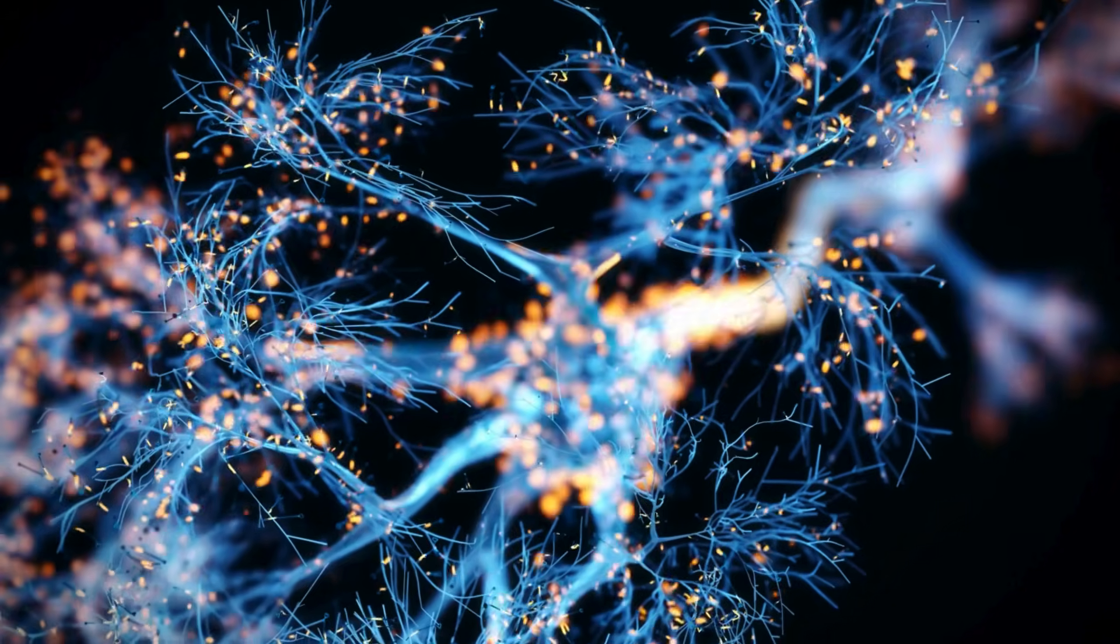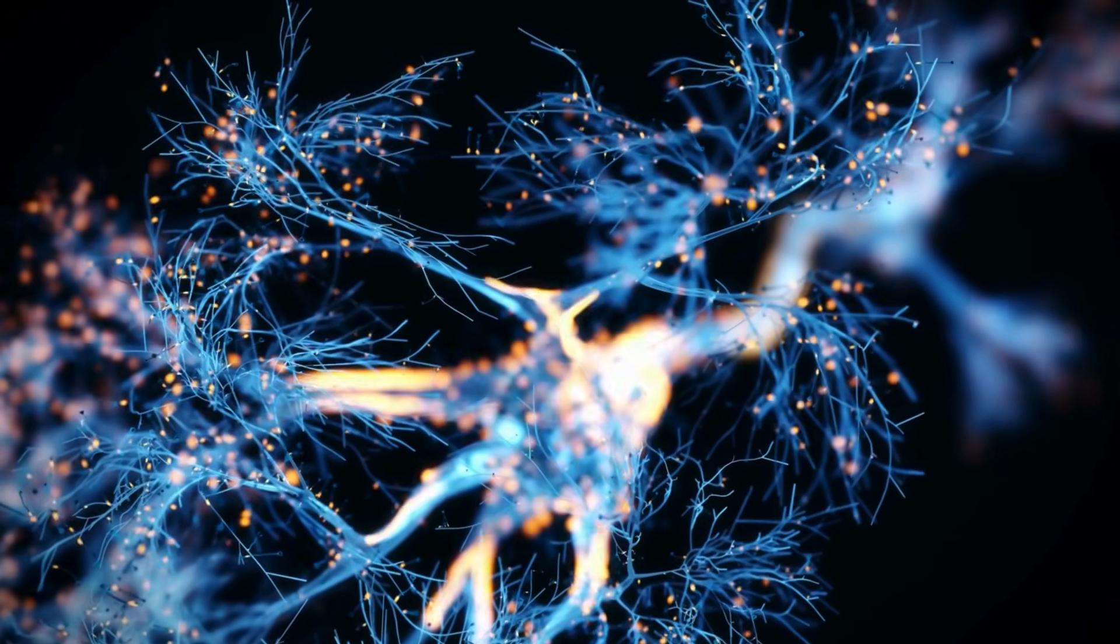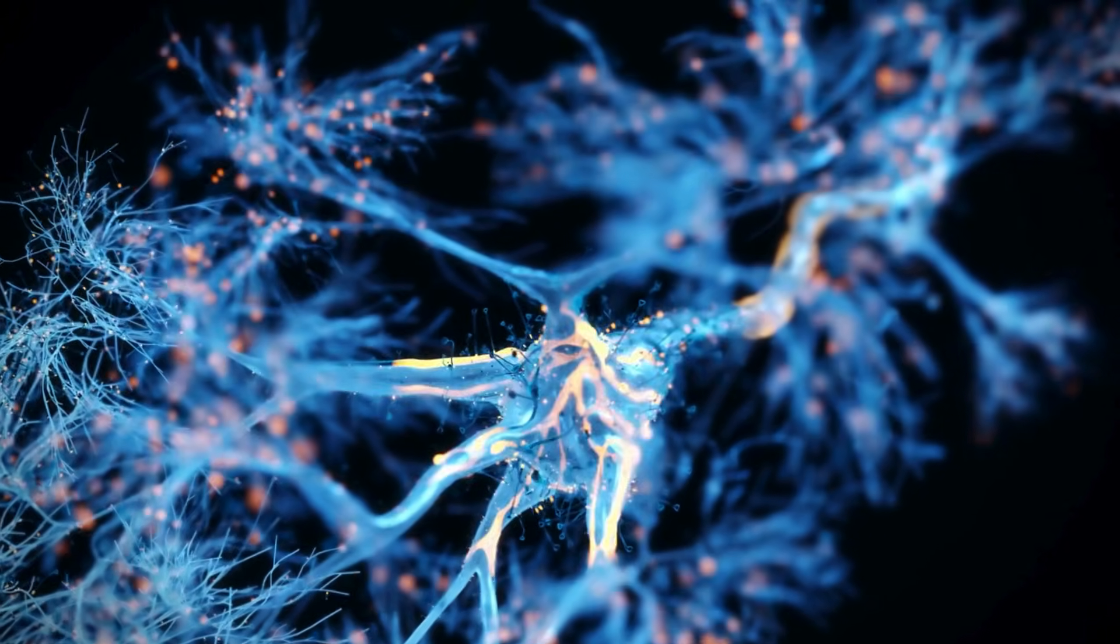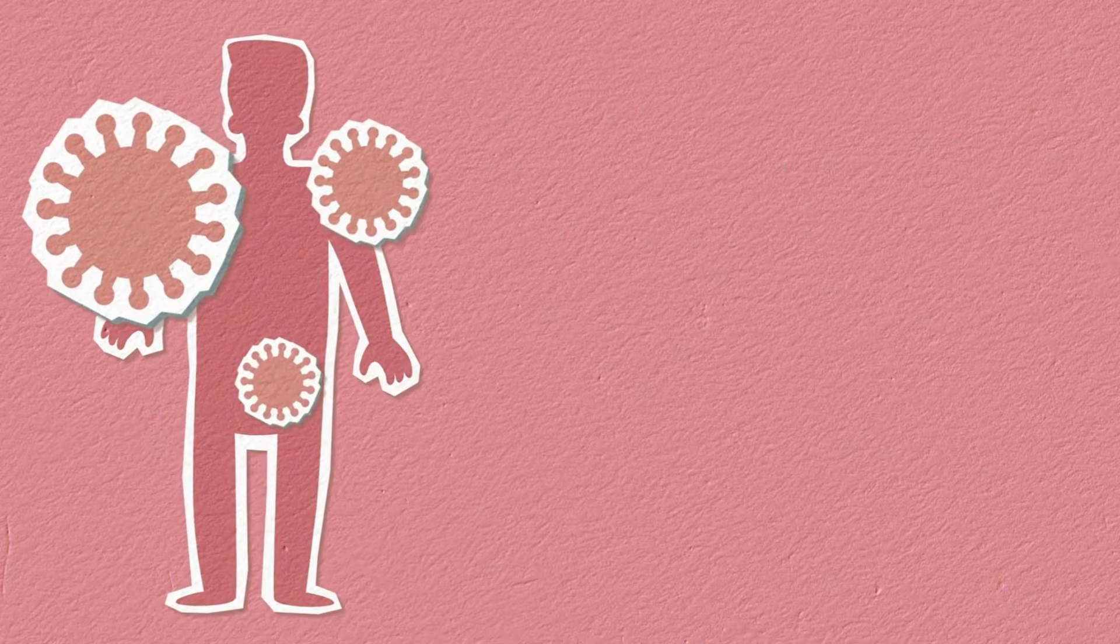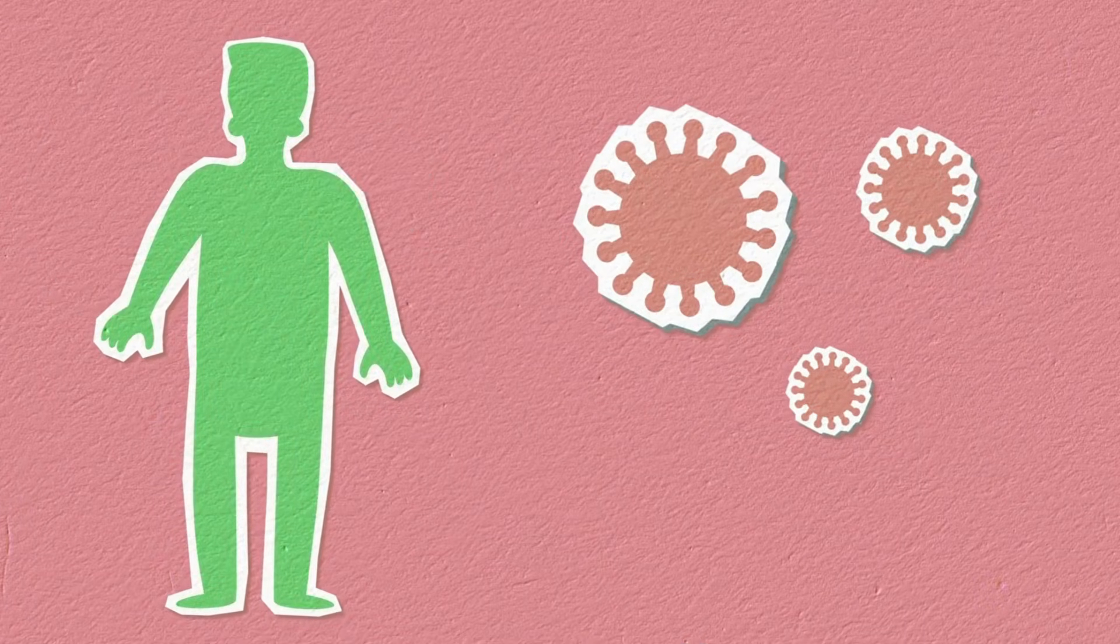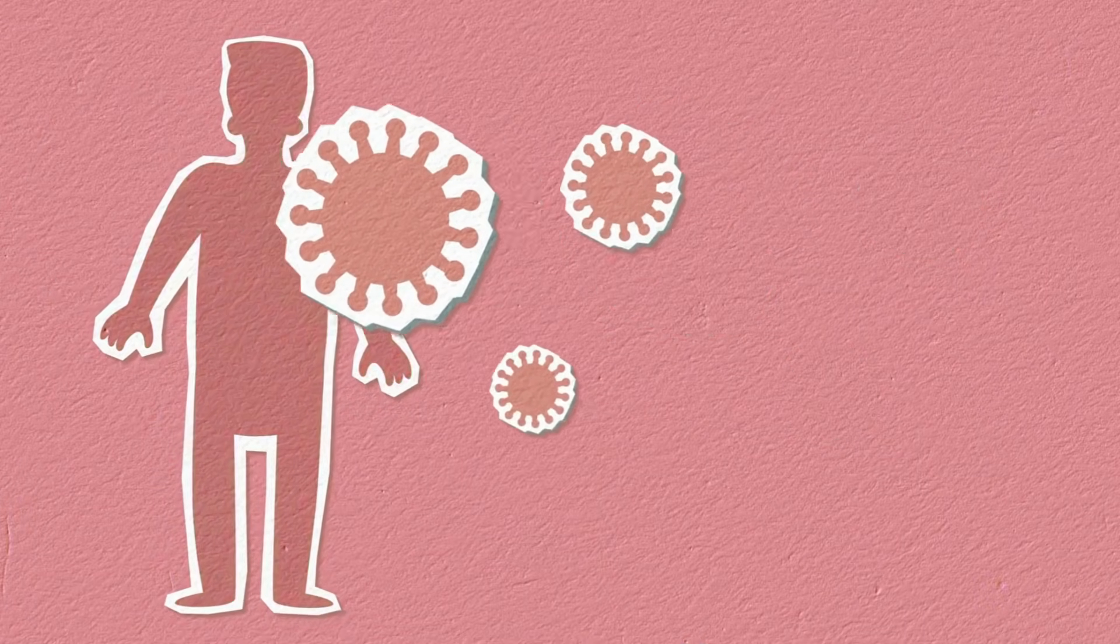So what is germline targeting and why is it so revolutionary? Think of your immune system as an army. The soldiers in this army are B-cells, which produce antibodies. Most of the time, they're like raw recruits—they have potential, but they need training.